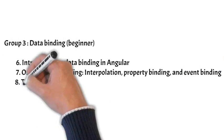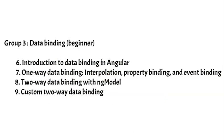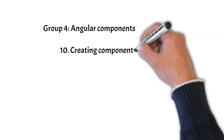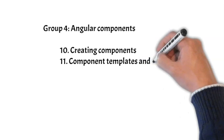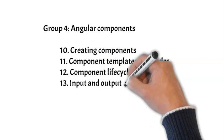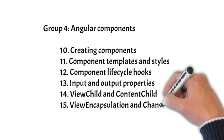Then we will see two-way data binding with ng-model and custom two-way data binding. In group four, we will talk about Angular components, which includes creation of components, component templates and styles, component lifecycle hooks, input and output properties, view child and content child, view encapsulation, and change detection.